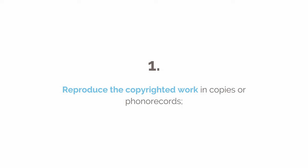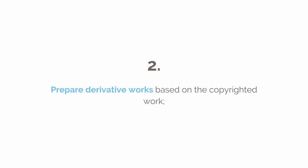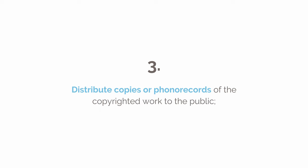So to put it simply, only the creator of the song may: one, reproduce the copyrighted work in copies or phonorecords — so for example, that's recording your cover song or copying the record. Two, prepare derivative works based on the copyrighted work, so like changing lyrics or making a mashup. Three, distribute copies or phonorecords of the copyrighted work to the public, so putting your cover song or remix out on Spotify or iTunes.